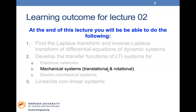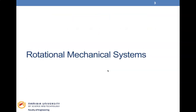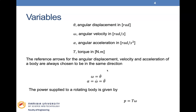The variables we use in rotational mechanical systems are: angular displacement in radians, angular velocity in radians per second, angular acceleration in radians per second squared, and the torque applied is in newton-meters. Remember that for the translational system we had x for translational displacement and velocity for translational velocity.